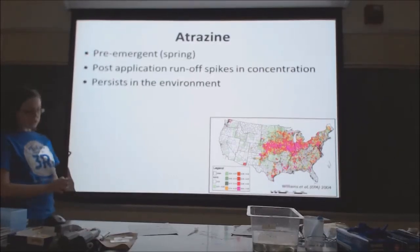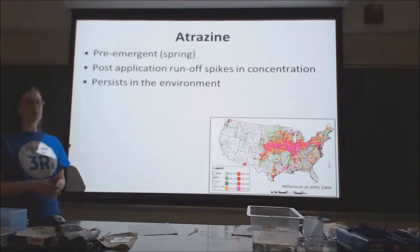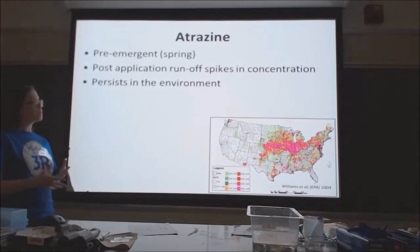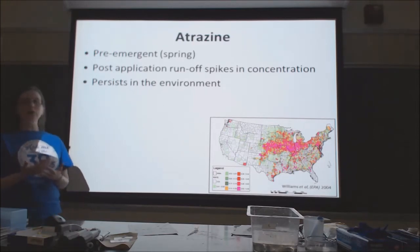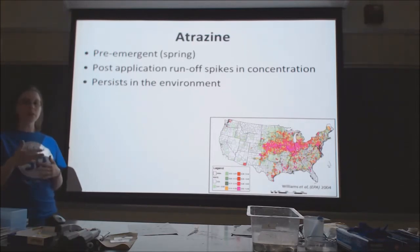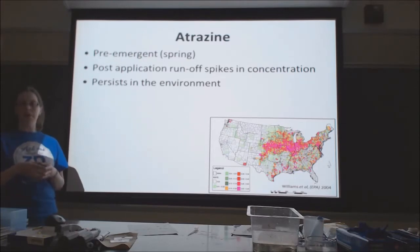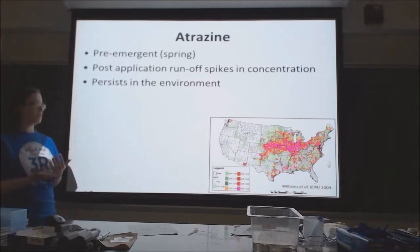Atrazine is really persistent in the environment. The herbicide was developed nearly 50 years ago, and in Europe they've outlawed its use. But it got into the groundwater where it's protected from sunlight, and you can still find it in the groundwater in Europe even though it hasn't been used in about 15 years.